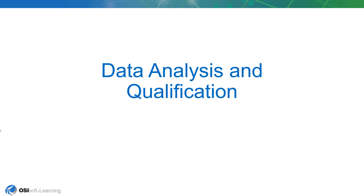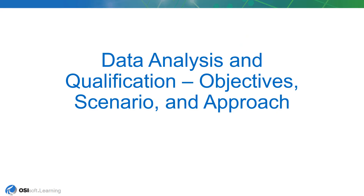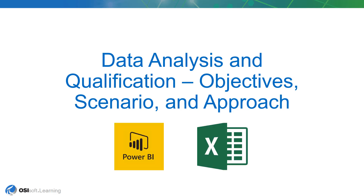We are now in the data analysis and qualification section of this course. The previous sections of this lab have provided us with the data set necessary to start formulating a model to predict the behavior of the regeneration times for the dryers. In the following section we will be taking the event frame dryer regeneration cycle data and analyzing this set of data to find relationships between the parameters we have and the resulting regeneration times. The objective of this section is to analyze the dryer regeneration cycle event frame data using various tools at our disposal, including Power BI and Excel, and to qualify which variables are important to take into account for our predictive model.